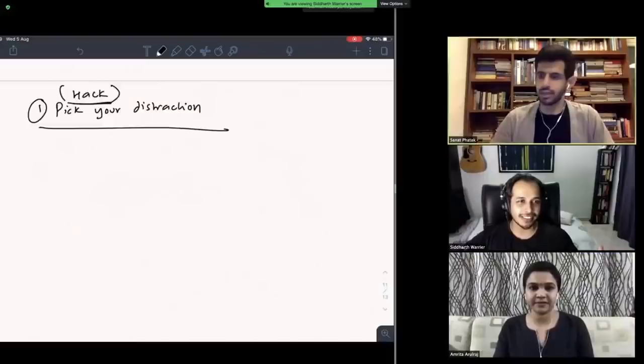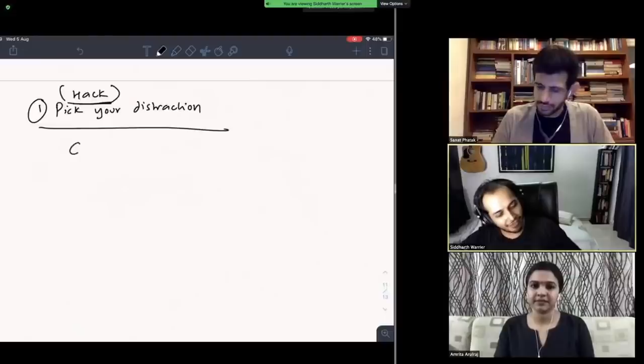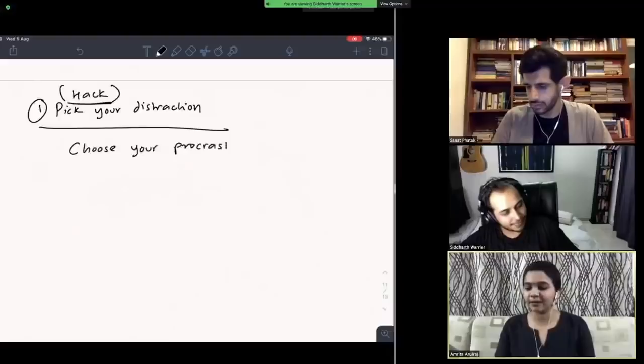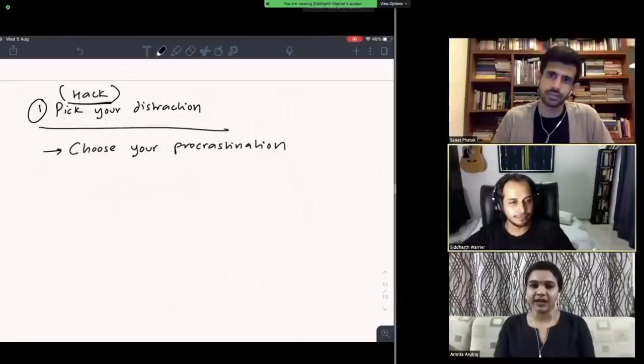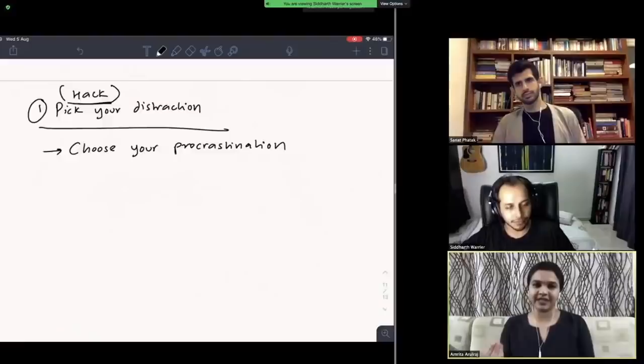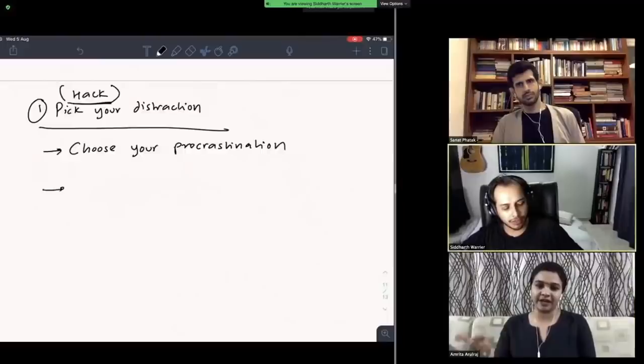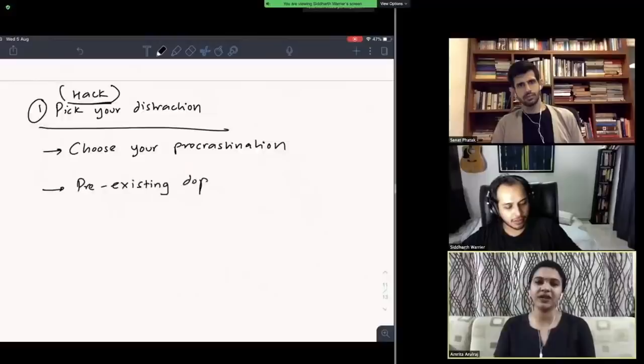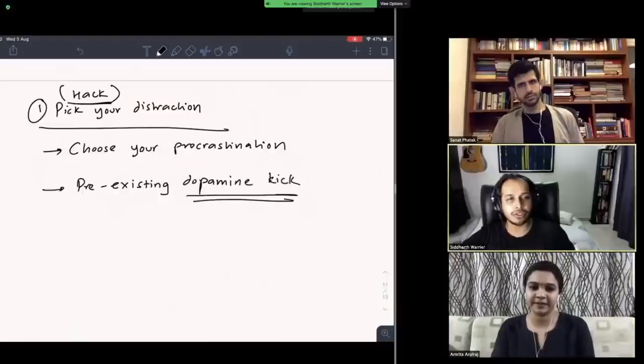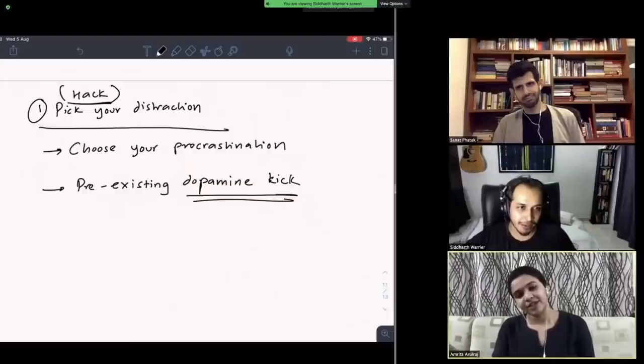I pick X number of things that I like, in my case three things that I genuinely like and enjoy doing. I enjoy the process of it without having an end goal. So hack your distraction. You're going to get distracted anyway, you might as well choose in advance what you're going to get distracted by. Choose your procrastination.